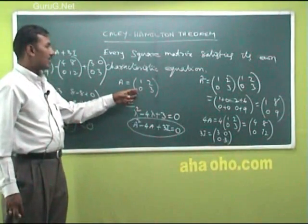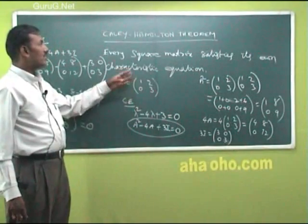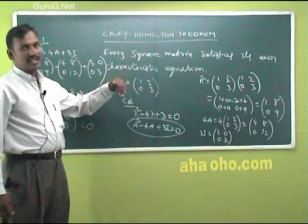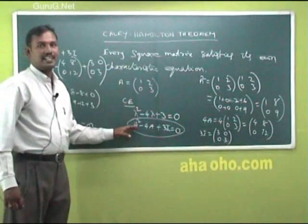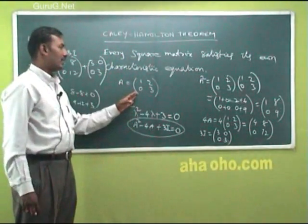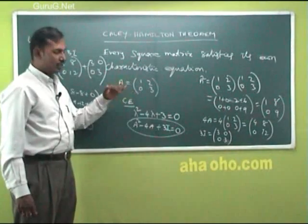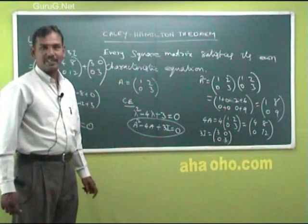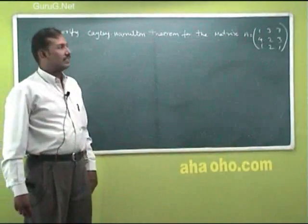So that means the given matrix A satisfies its own characteristic equation. Therefore, this matrix satisfies the Cayley-Hamilton Theorem. That was for a 2×2 matrix. Now we go to a 3×3 matrix.